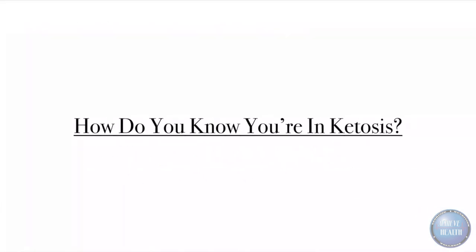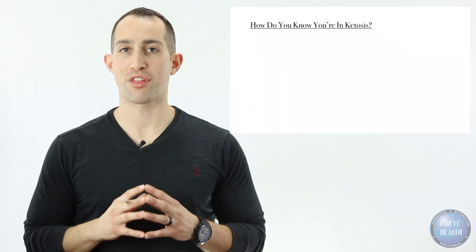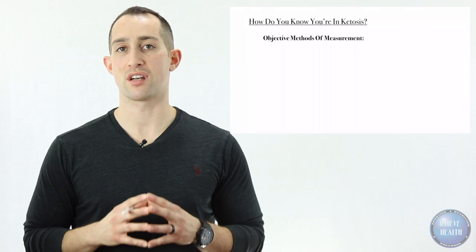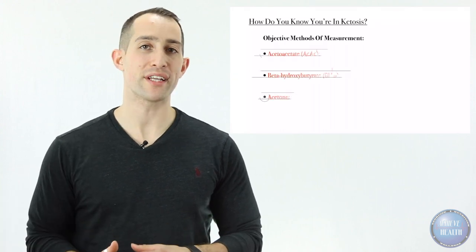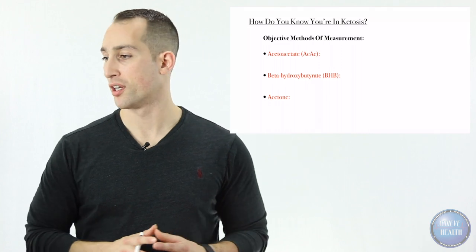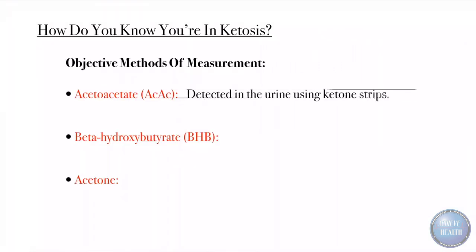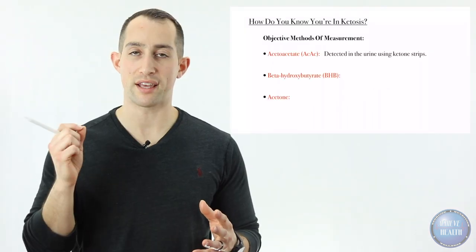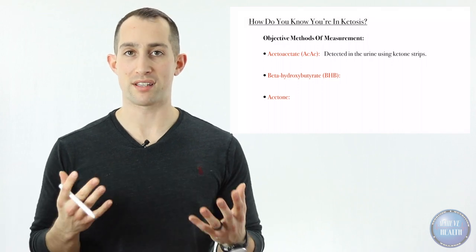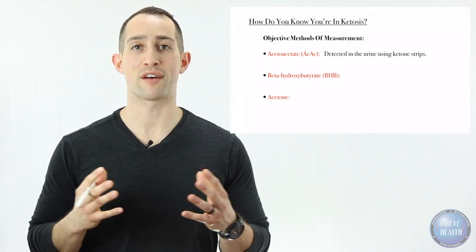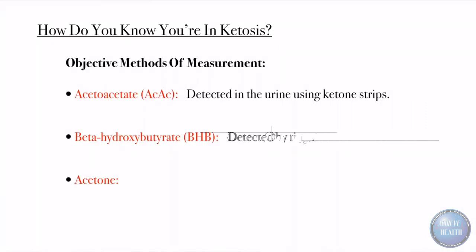How do you know you're in ketosis? This is a fantastic question. There are three different very objective methods of measurement, and it goes back to the three different ketone bodies we talked about earlier. We have acetoacetate, ACAC, which is detected in the urine using ketone strips. You take these strips and dip them in your urine and the color it changes to will show you the ketone levels in your urine. We have beta-hydroxybutyrate detected by finger prick in the blood. This is the most expensive method. Acetone detected in the breath using a breath meter.